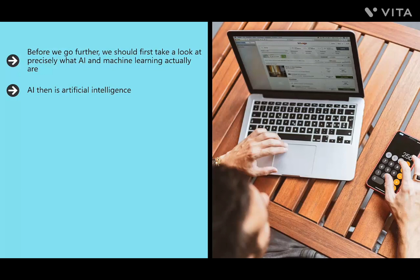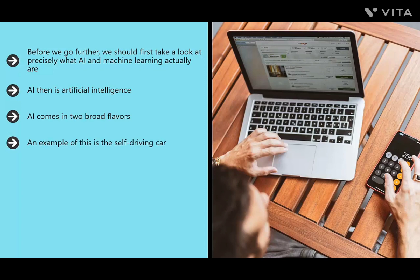Such software is capable of making meaningful choices and conducting activities that we would normally consider the domain of humans. AI comes in two broad flavors. One is weak AI, also known as narrow AI, which is essentially a form of AI designed to perform a specific job. An example is the self-driving car, capable of knowing the positions of countless cars and responding by steering, accelerating, and braking. From the outside, you might think a human were driving.